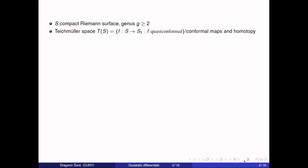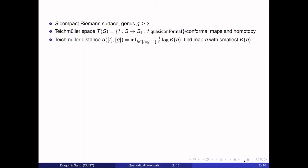The Teichmüller space of the Riemann surface S is the space of all quasiconformal maps from the fixed Riemann surface S to variable surfaces S1, up to the usual post-composition by conformal maps and homotopy. So an element is a class of quasiconformal maps. The Teichmüller distance between two classes of quasiconformal maps F and G is given as one half the log of the quasiconformal constant of a map H, where H is an arbitrary map in the homotopy class of F composed with G inverse, and we take the infimum over all such H.